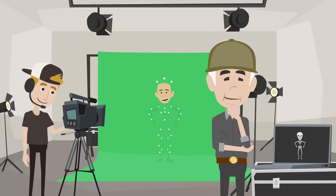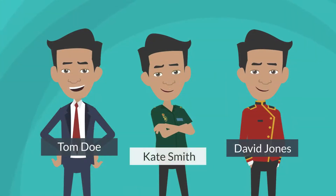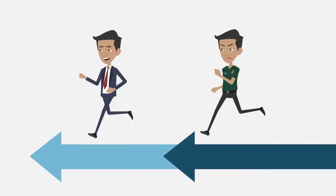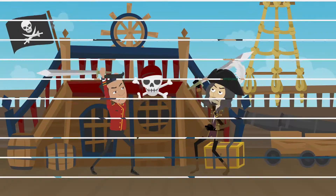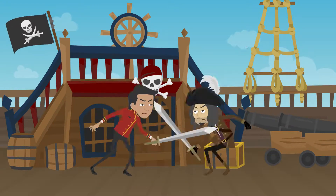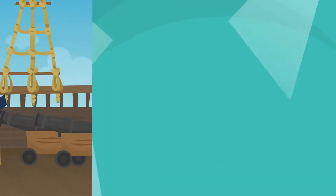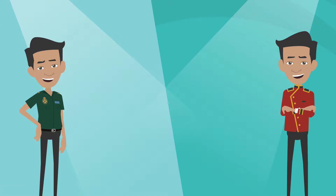Next, we want to apply the same process and define a few characters that you could see yourself playing. The best part is that after you come up with a little description of these characters, all you have to do is get into character, and I'll do the rest. Your job now is to come up with three to four characters for the shoot.